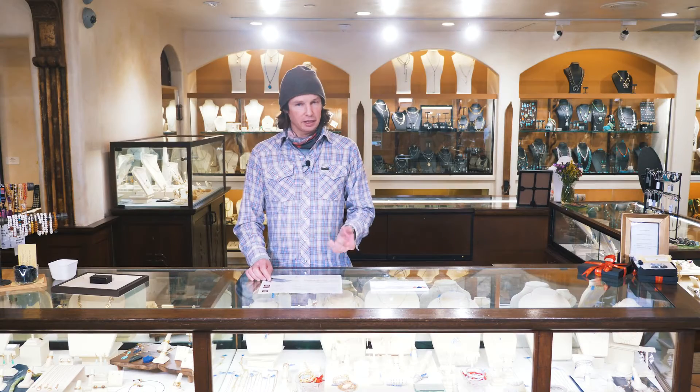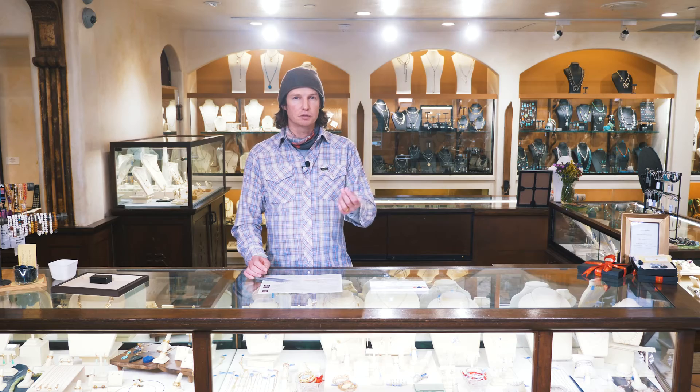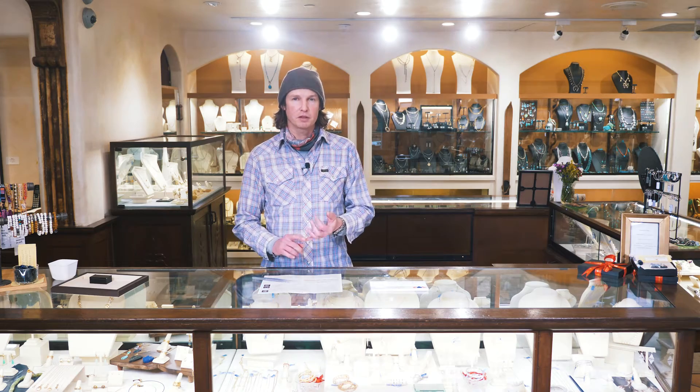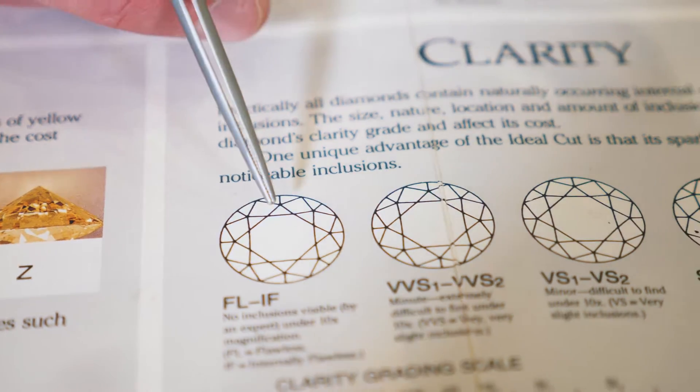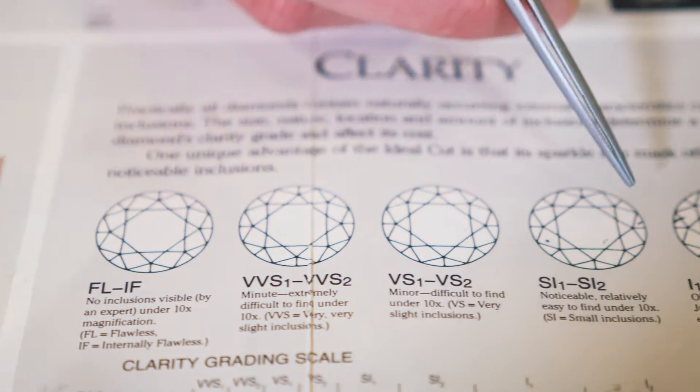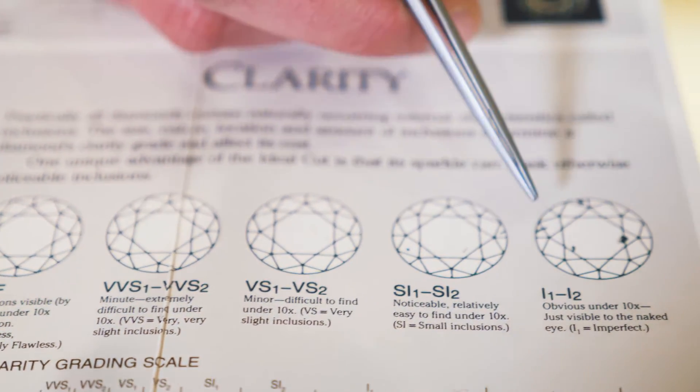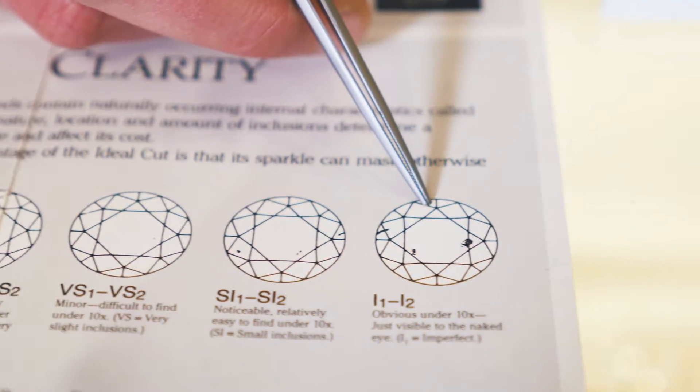The carat weight is the weight of the stone, which also ends up being the size. Clarity is the imperfections of the stone — natural inclusions. There are feathers, pinpoints, and carbon spots that you can see with your naked eye.